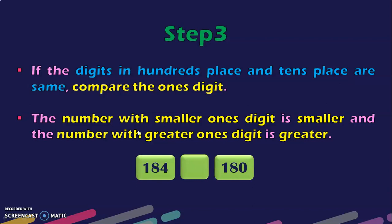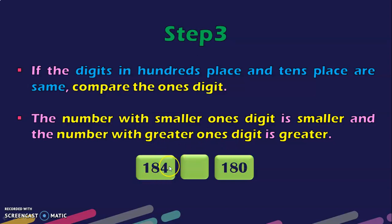Let us see this with an example: 184 and 180. Here the 100s place is both 1, and the 10s place is both 8. So as per the rule, next you look at the 1s place. In the 1s place you have 4 and 0. Since 4 is greater than 0, 184 is greater than 180.